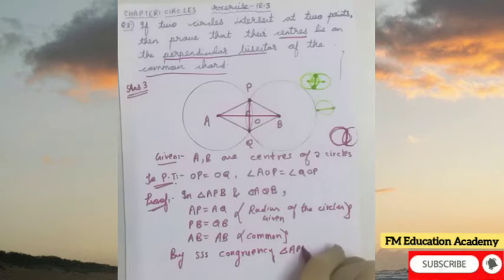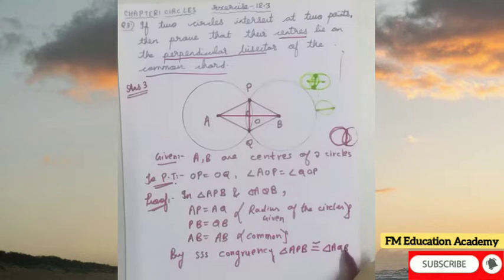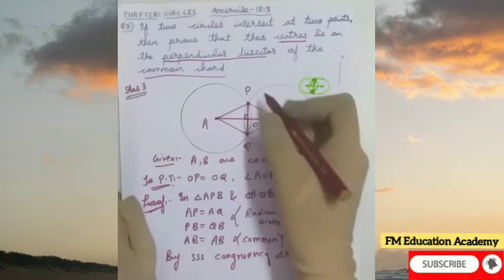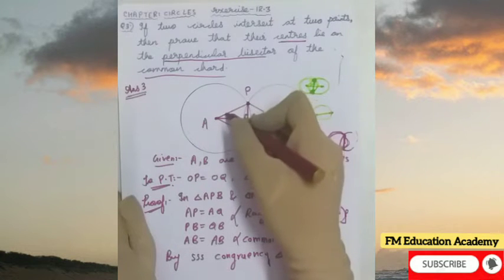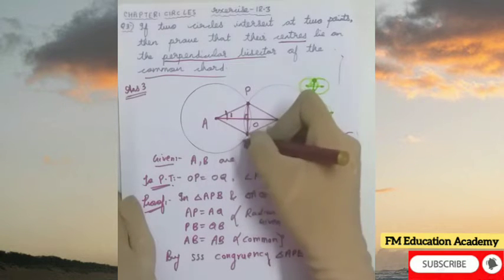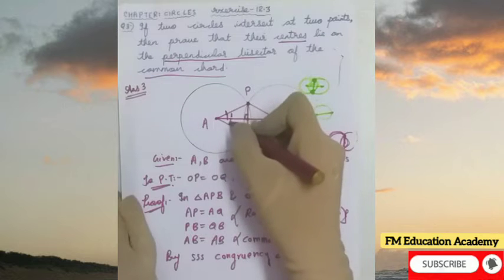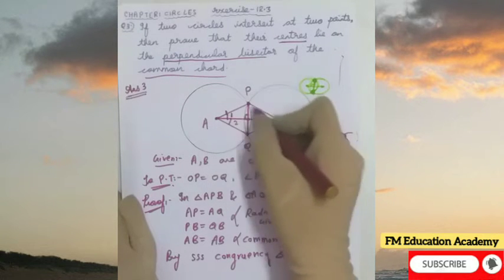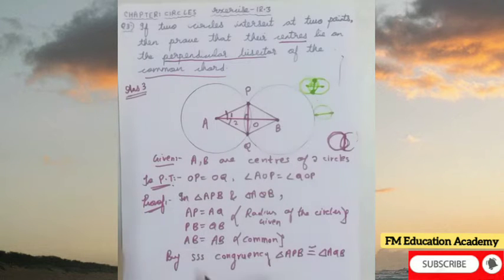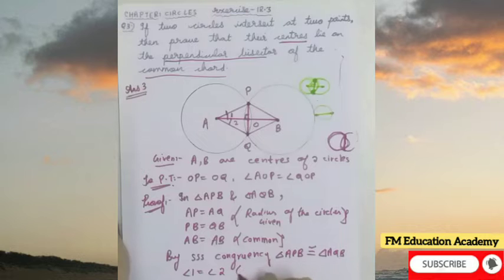Since the triangles are congruent, for simplicity let angle PAO be angle 1 and angle QAO be angle 2. By CPCT, the corresponding angles are also equal, so angle 1 equals angle 2.